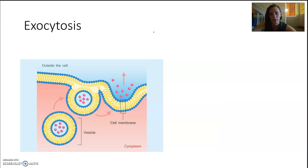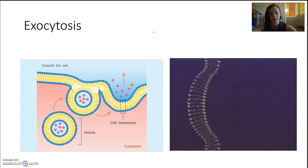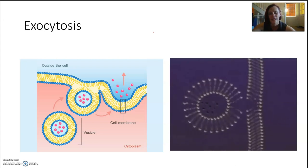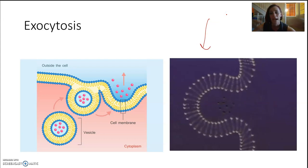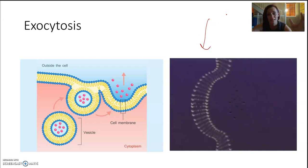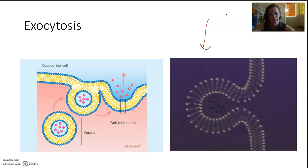Exocytosis is the opposite. It's doing the same job, but instead of bringing things into the cell, it is expelling things in large quantities. And these little things here, the little bubble, that's called a vesicle and it's made by more phospholipids. You can still see it's a bilayer and it fuses with the external membrane, opens up and releases the waste.